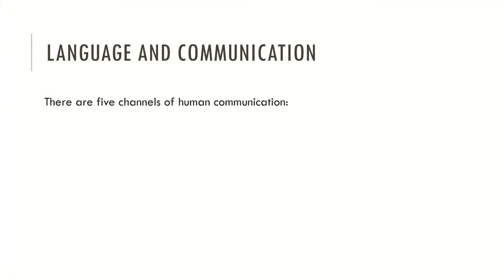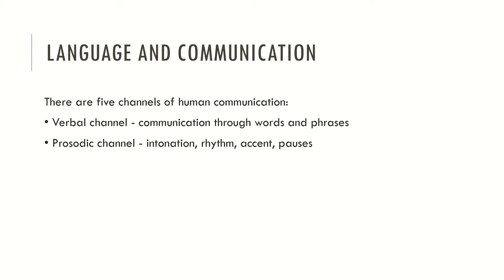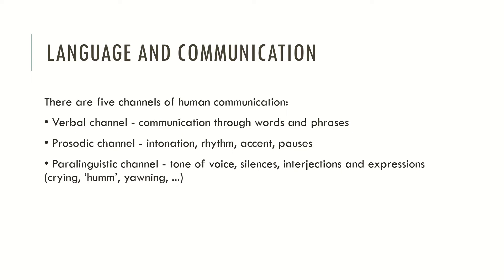There are five channels of human communication. The verbal channel, which is communication through words and phrases. The prosodic channel, which is the intonation, rhythm, accent and pauses that we use during our narratives and during our speech. The paralinguistic channel, which refers to the tone of voice, silences, interjections and expressions such as crying or yawning — we use these noises to communicate something without using words.